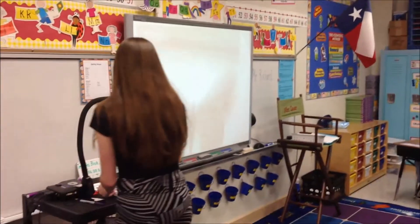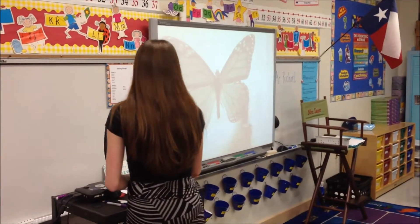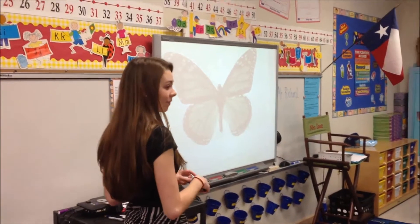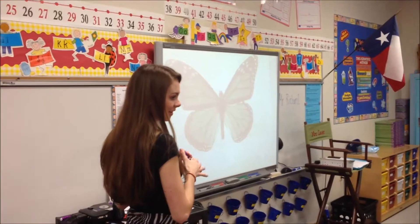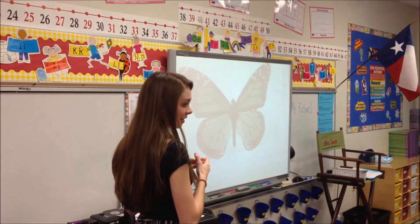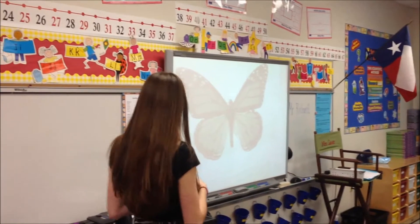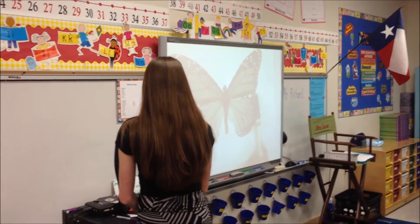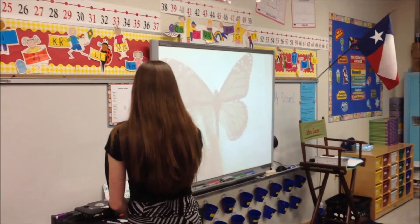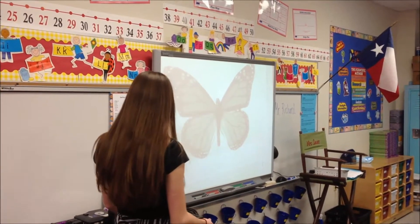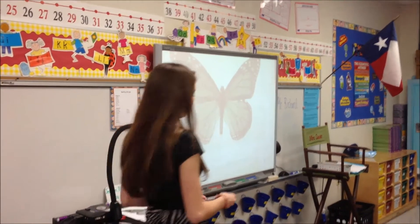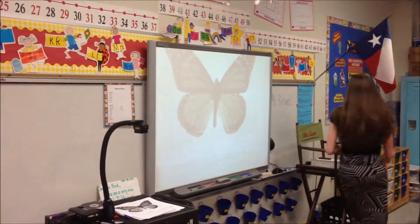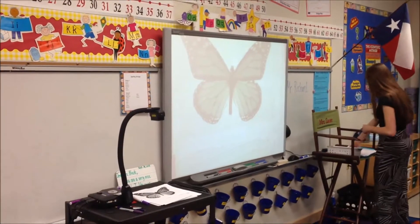Let's go back to the butterfly. What's the same on this side as that side? They're both even — exactly. This way is the same length as that way. They both have spots on both sides. So there's lots of examples of symmetry in nature and construction and artwork too.